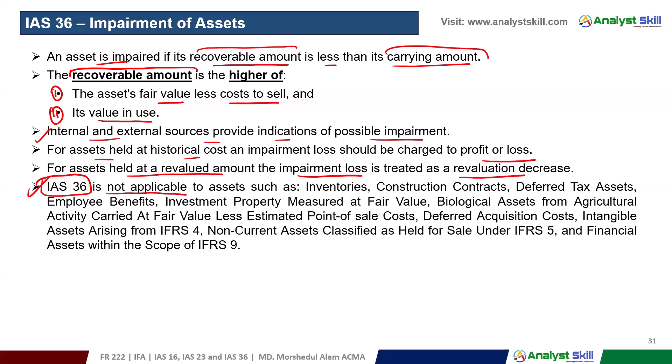The Impairment of Assets standard applies to certain asset classes. Inventories use the LCM — lower of cost and market value — method. Construction contracts, deferred tax assets, and employee benefits are not covered. The standard applies to assets such as patents and furniture.